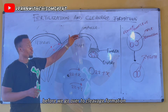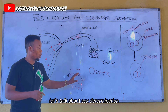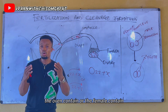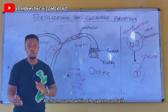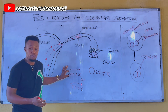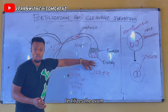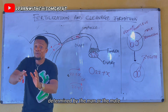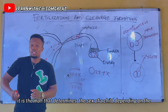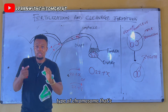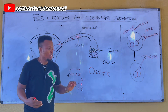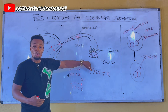Having understood fertilization, let's talk about sex determination — how to determine the sex of a child. The female contains the X chromosome, while the sperm contains either the X or the Y chromosome. If a sperm carrying the X chromosome fertilizes the ovum, a girl is formed.